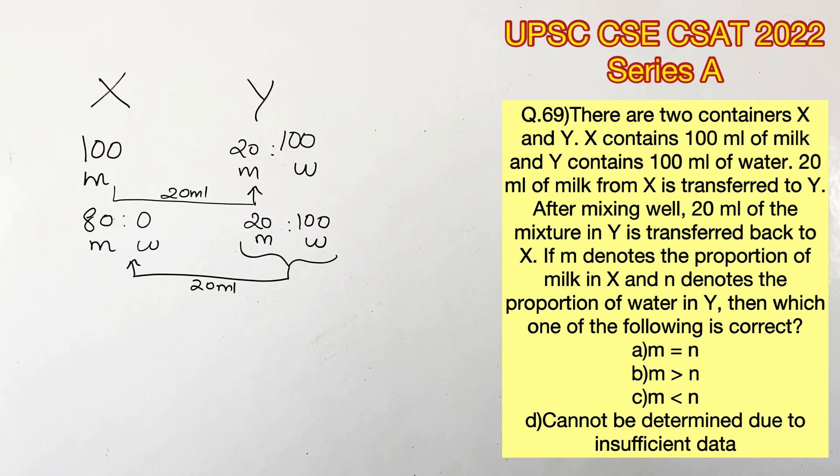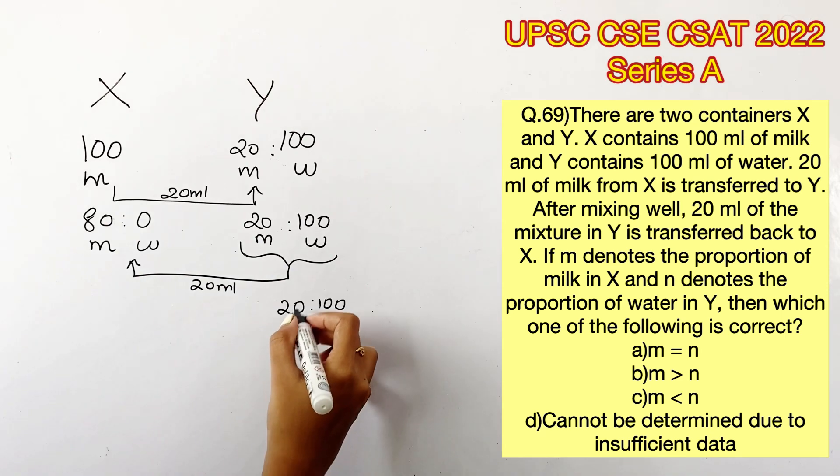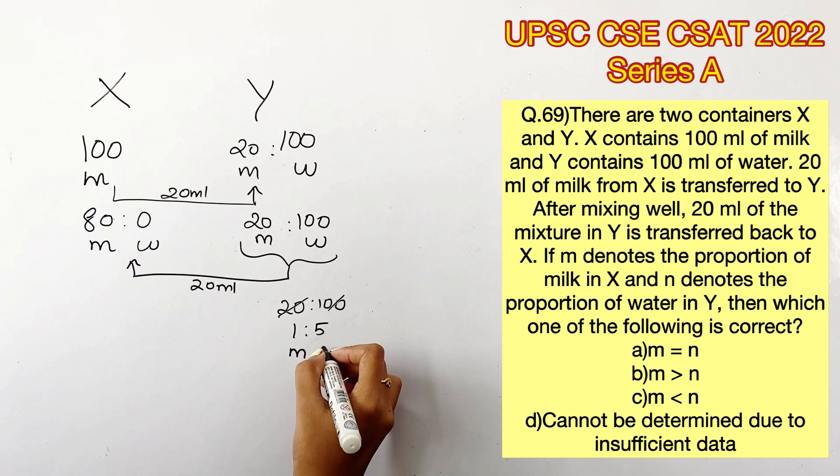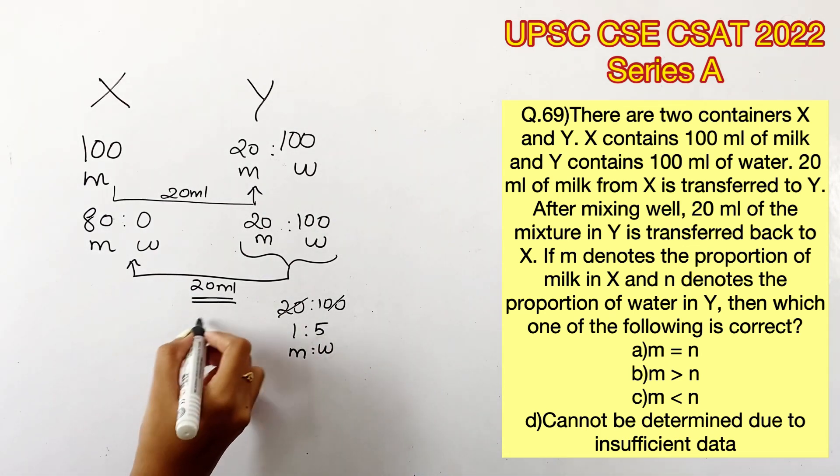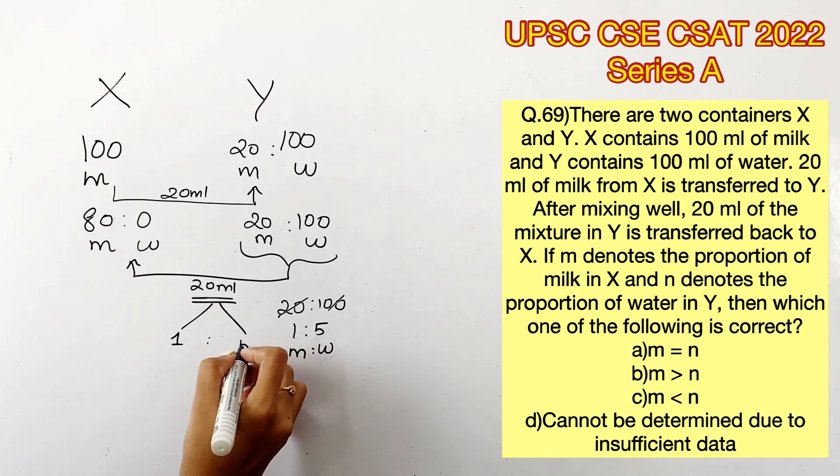To find that out, we need to know the ratio of milk and water present in Y, which is 20:100, that is 1:5. So milk and water is in the ratio 1:5 in container Y. So in 20 ml, there's one part milk and five parts water.